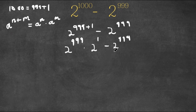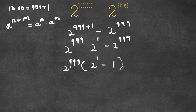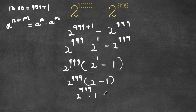Now because both terms have 2 to the power of 999 in them, I'm simply going to factor that out. If I factor out 2 to the power of 999, I get 2 to the power of 999 times the quantity 2 to the power of 1 minus 1, which is 2 to the power of 999 times 1. So this is simply equal to 2 to the power of 999. So this is our answer.